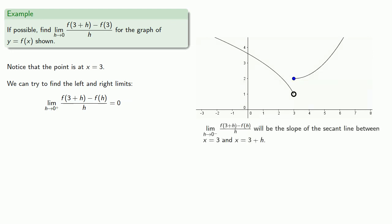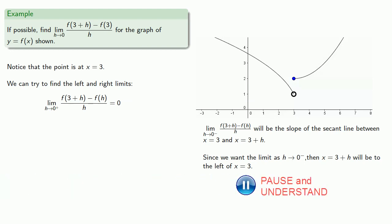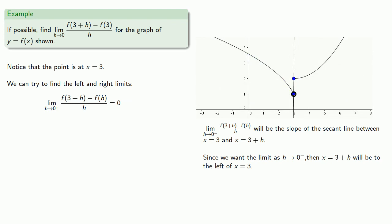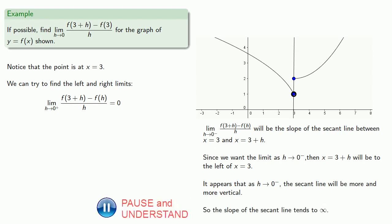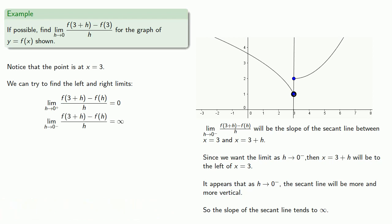Again, the difference quotient is the slope of the secant line between x equals 3 and x equals 3 plus h. Since we want the limit as h goes to 0 from below, x equals 3 plus h will actually be to the left of x equals 3. We see that as h goes to 0 from below, the secant line becomes more and more vertical, so the slope tends to infinity. This disagreement between the limit from the left and from the right means that the limit itself doesn't exist.